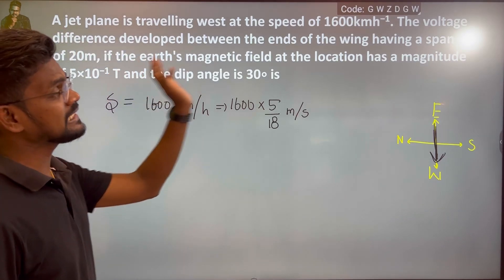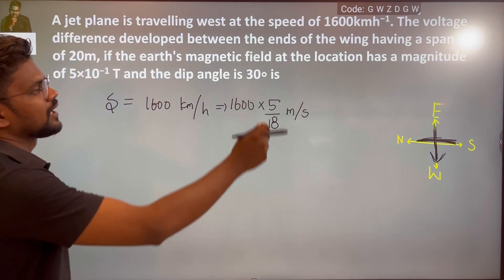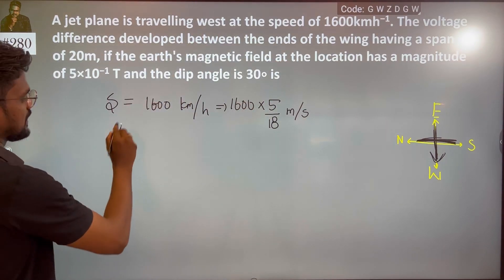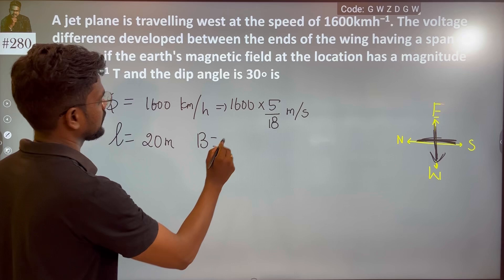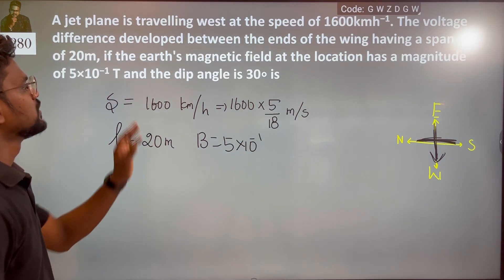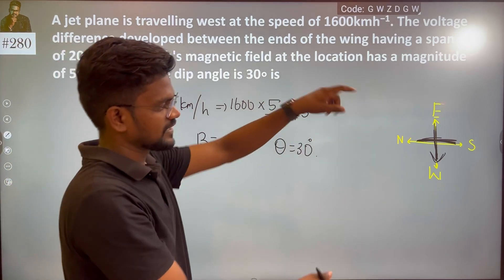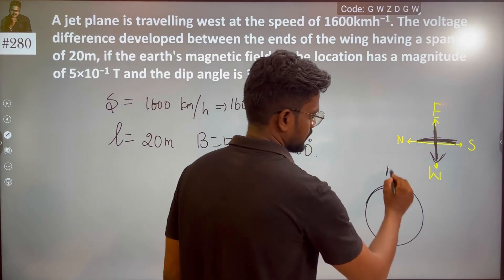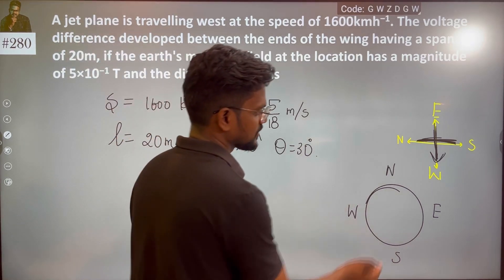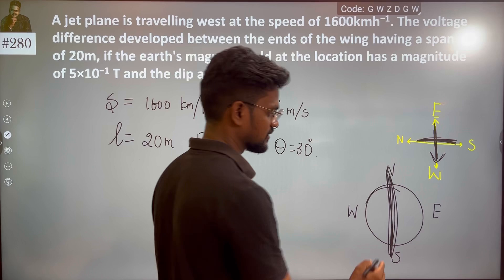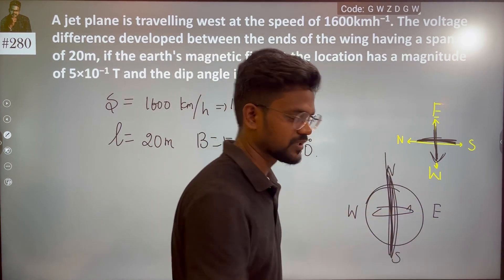The voltage difference is developed at the ends of the wings. Now, this is the Earth's magnetic field vertical component. This is the Earth. You know that this is North and South, this is West, and this is East. This is the vertical component, and this represents the wings — this is the plane.